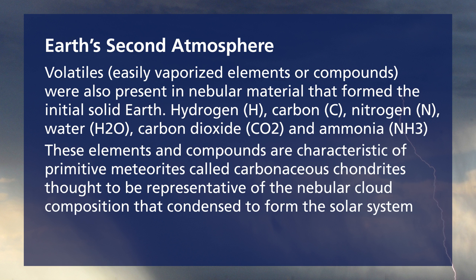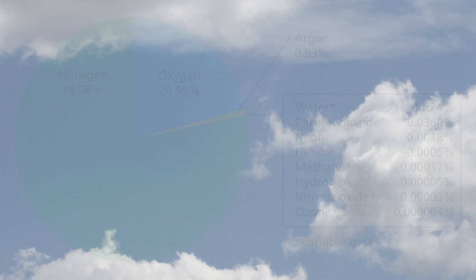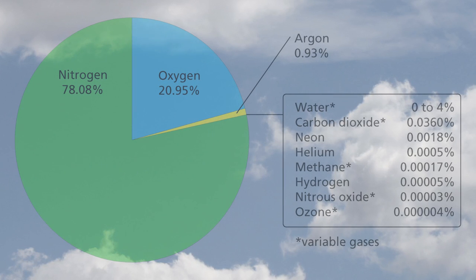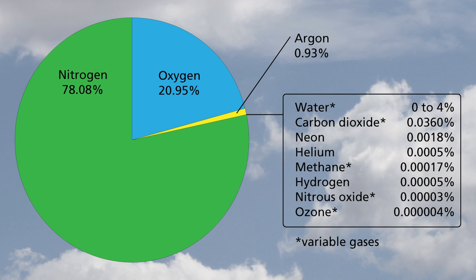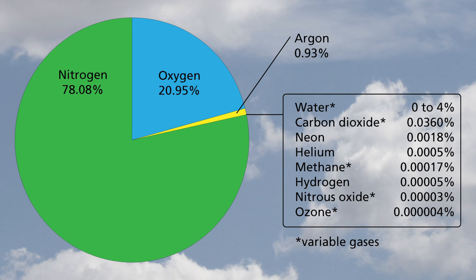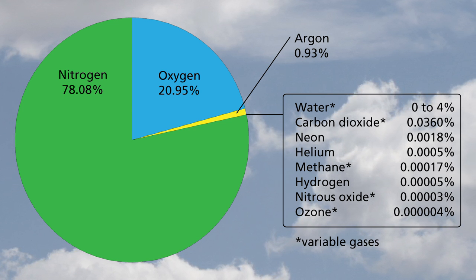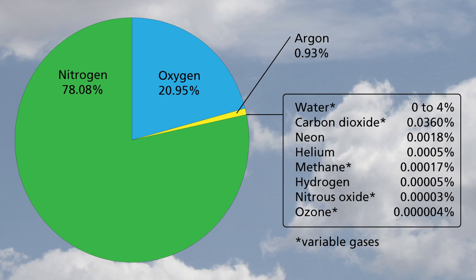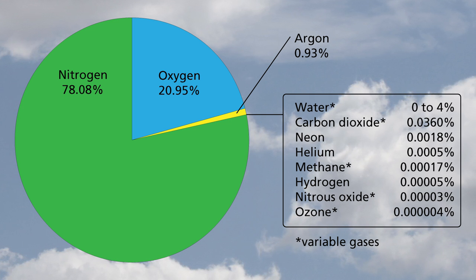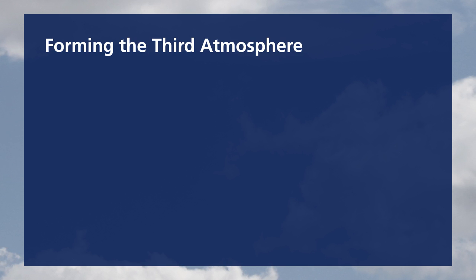Today's atmosphere — we call it the third atmosphere — has a measured composition of approximately 78% nitrogen, 21% oxygen, between 0 to 4% water vapor and variable gases, less than 1% argon, and then trace elements including CO2, neon, helium, methane, and others.